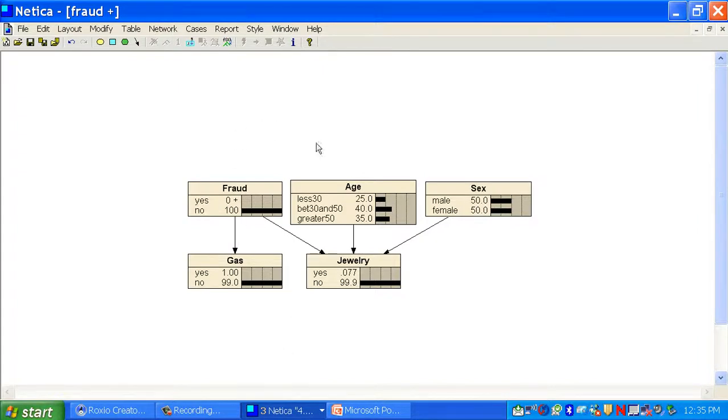This fraud network is interesting. These are the prior probabilities of the various values. Notice something. The probability of fraud is almost 0. If I find out the person has a certain age, here it's between 30 and 50, it doesn't change.